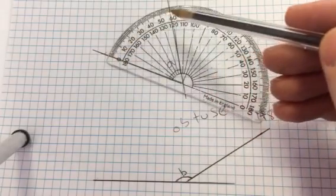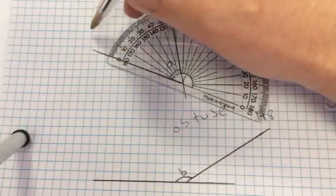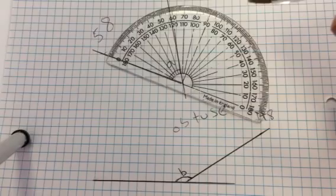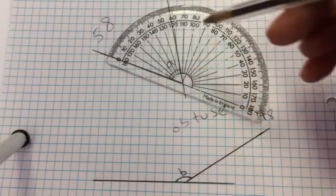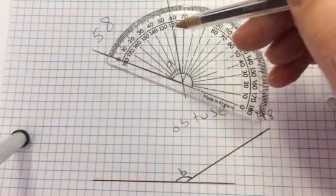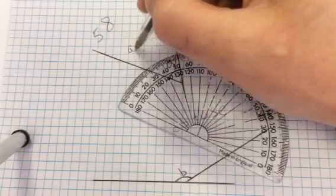Read from zero, and in this case we have about 58. They'll give you a margin of error. Don't read from that side and say that it's 120, because obviously this is an acute angle.